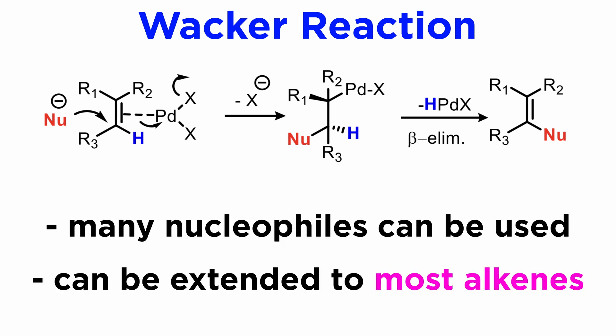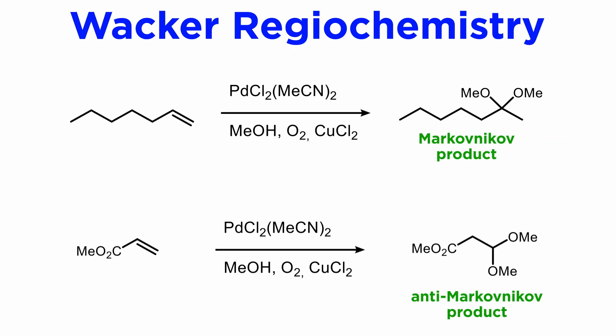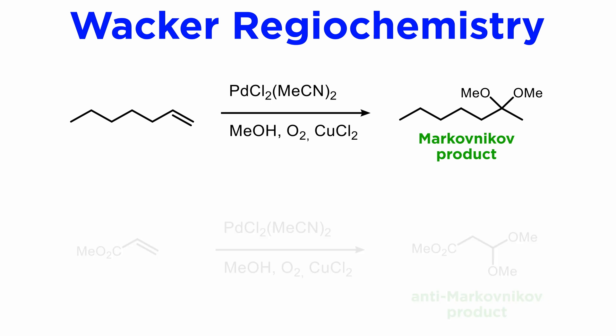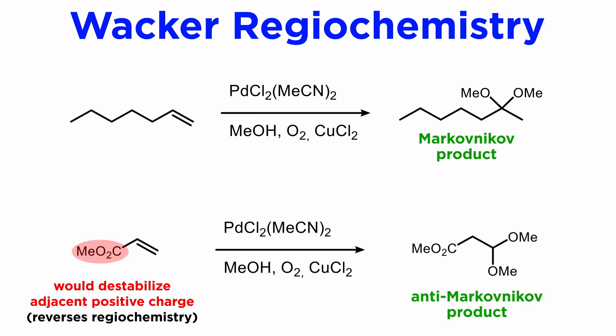This example shows that the Wacker reaction is not limited to ethylene but can be extended to most alkenes. With asymmetrical alkenes, the problem of regiochemistry arises. The Wacker reaction follows Markovnikov selectivity, which means that the nucleophile ends up at the carbon which best stabilizes the incipient positive charge. In the first example, the secondary carbenium ion is more stable than the primary one. In the second example, the ester function destabilizes an incipient positive charge at the alpha position, and the opposite regiochemistry is observed.